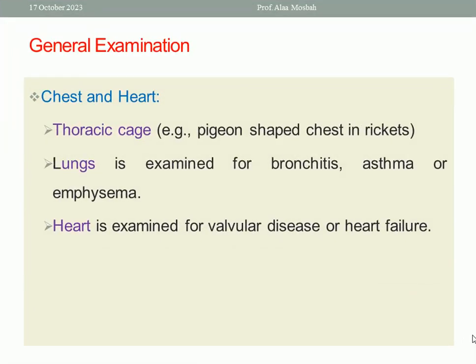For chest and heart examination, look at the shape of the thoracic cage. A pigeon-shaped chest is found in rickets. The lungs are examined for bronchitis, asthma, or emphysema using a stethoscope to detect rhonchi, crepitations, and decreased air entry. The heart is examined for any murmur due to valvular lesions, signs of heart failure, and gallop rhythm.